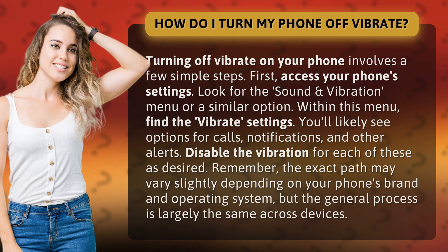Look for the Sound and Vibration menu or a similar option. Within this menu, find the Vibrate settings. You'll likely see options for calls, notifications, and other alerts. Disable the vibration for each of these as desired.